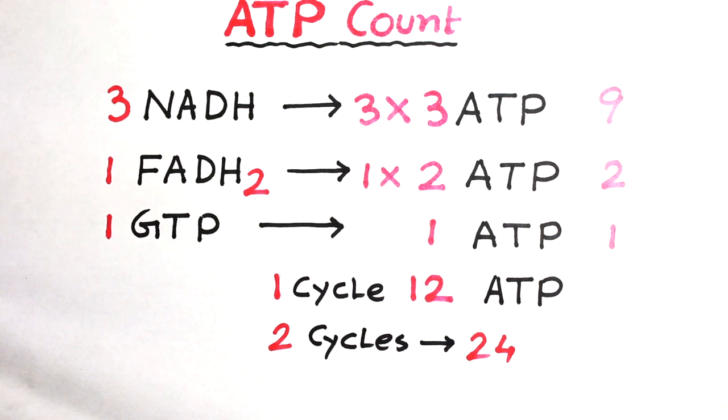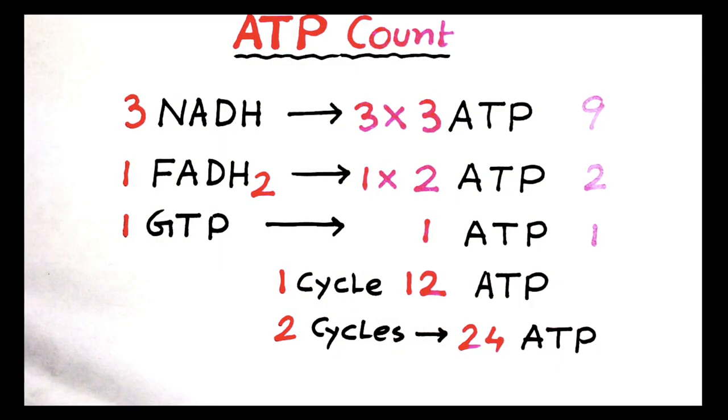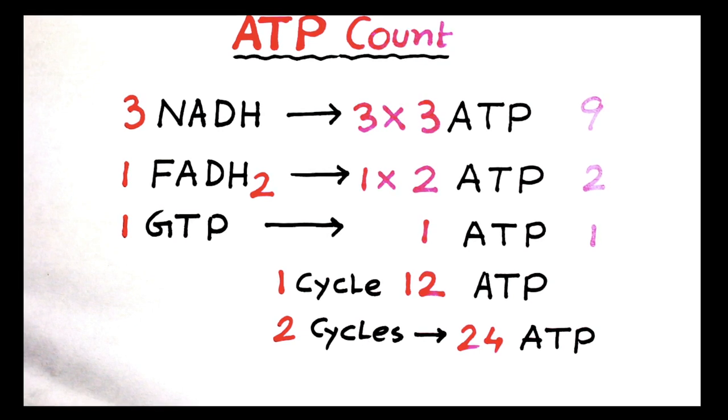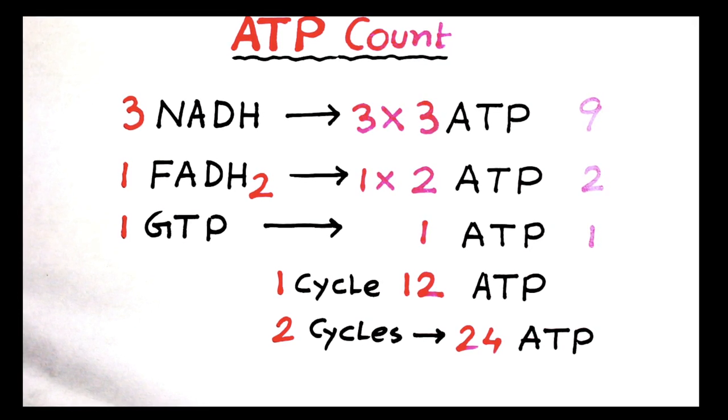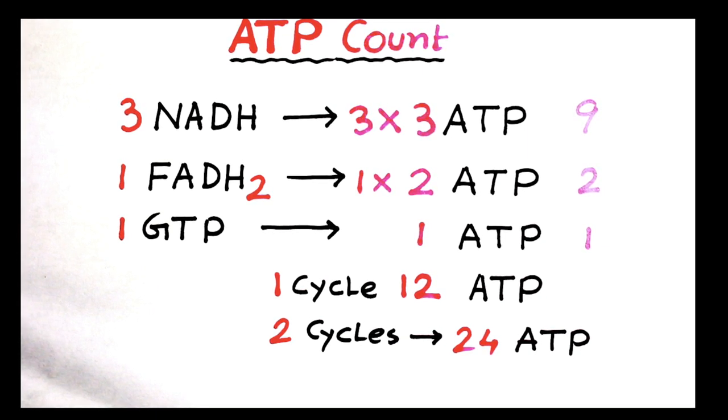As we know, one glucose molecule breaks down into two pyruvate molecules, which eventually go into two separate Krebs cycles. So if they ask how many ATP are produced in Krebs cycle, your answer should be 24. But if they ask how many ATP are produced in one Krebs cycle, then your answer should be 12.